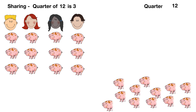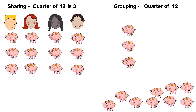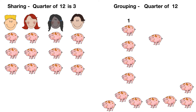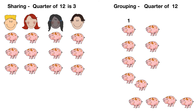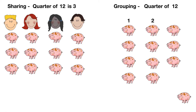Or we can find a quarter of 12 by grouping in fours like this. One group of four, two groups of four, three groups of four — so a quarter of 12 is three.